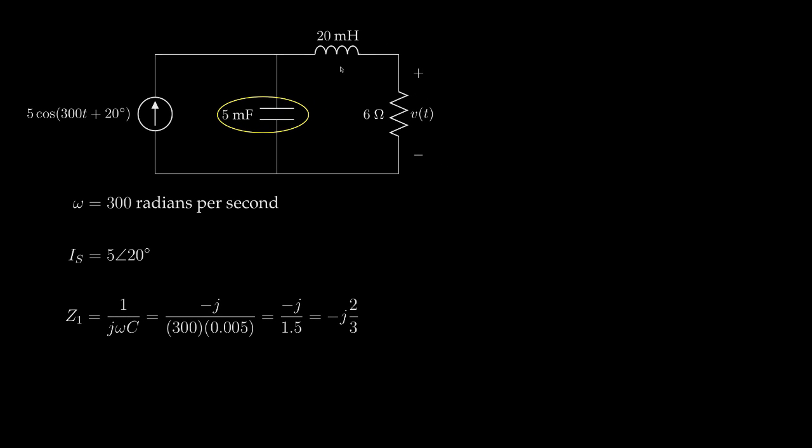Next, let's determine the impedance for the 20 millihenry inductor. The physical relationship between the inductor's inductance and its steady state sinusoidal impedance is j times the frequency omega times the inductance L. In that case, it's j times 300 times 0.02, or j times 6.